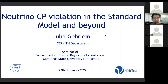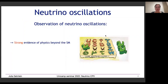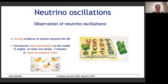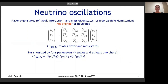The observation of neutrino oscillations provides very strong evidence for physics beyond the Standard Model, and beyond that it introduced new parameters to our model of nature — at least seven: three angles, at least one phase, and three neutrino masses. Neutrino oscillations happen because the flavor eigenstates of the weak interaction and the mass eigenstates of the free particle Hamiltonian are not aligned for neutrinos; they are related by a mixing matrix, the PMNS matrix.